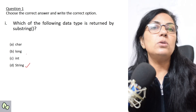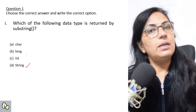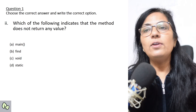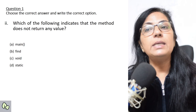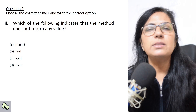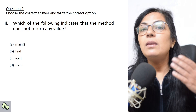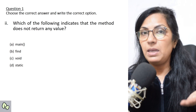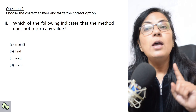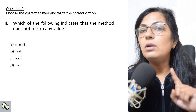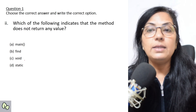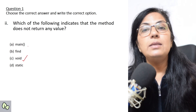I would like to advise you to please prepare the return data types for all mathematical, character, and string functions. Next question: which of the following indicates that the method does not return any value? You have done many times public static void main — void is there. Main is the function name. We don't use any return statement in that. So if the function does not return any value, always void is mentioned before the function name.